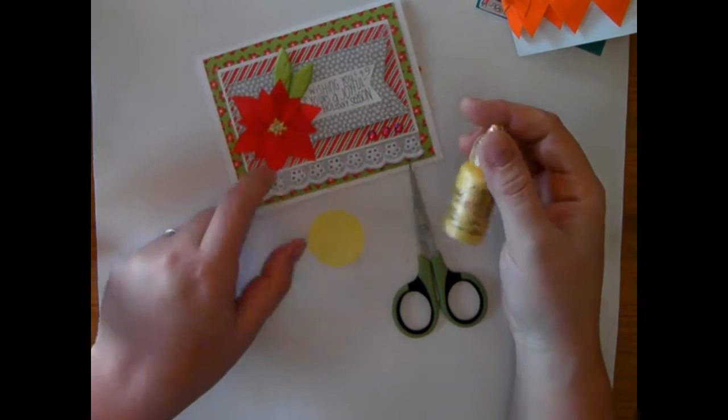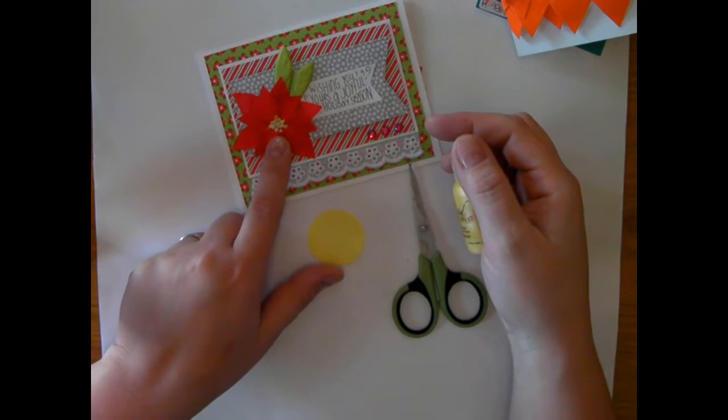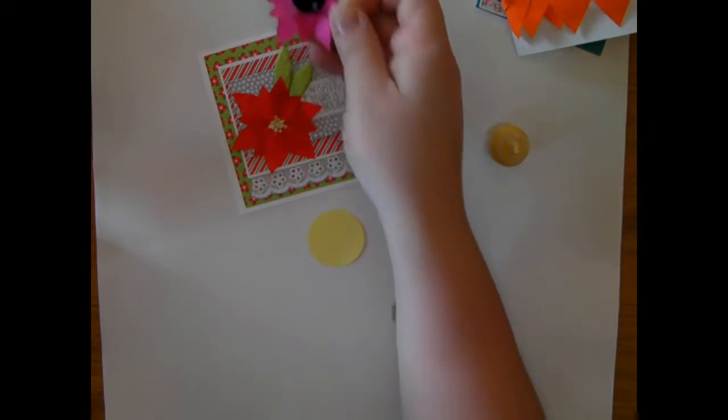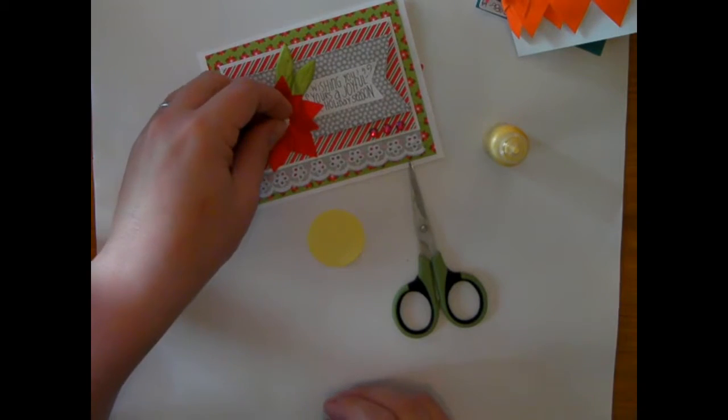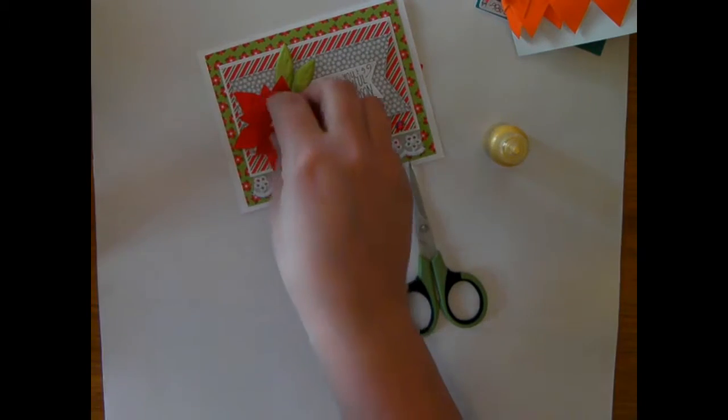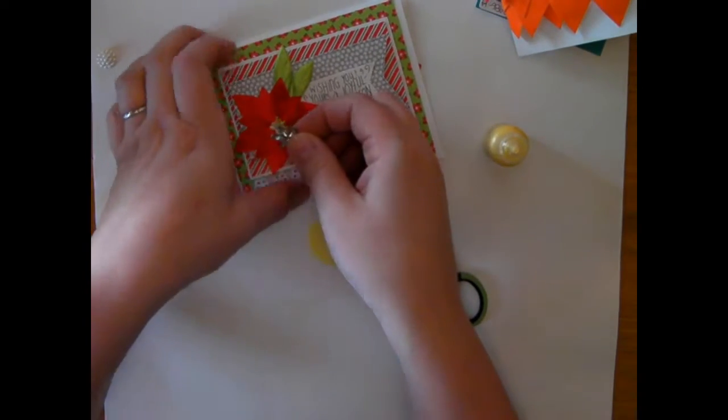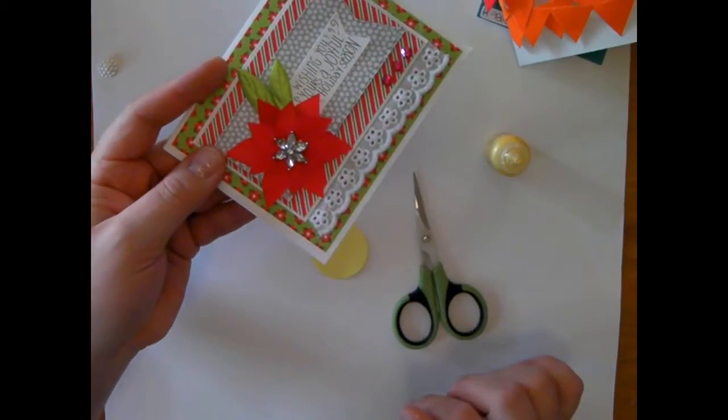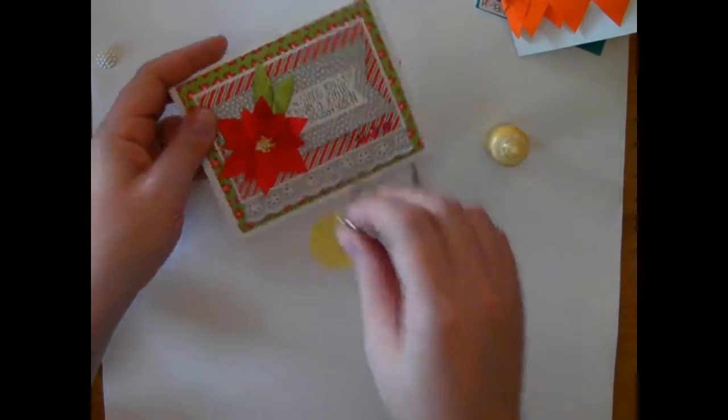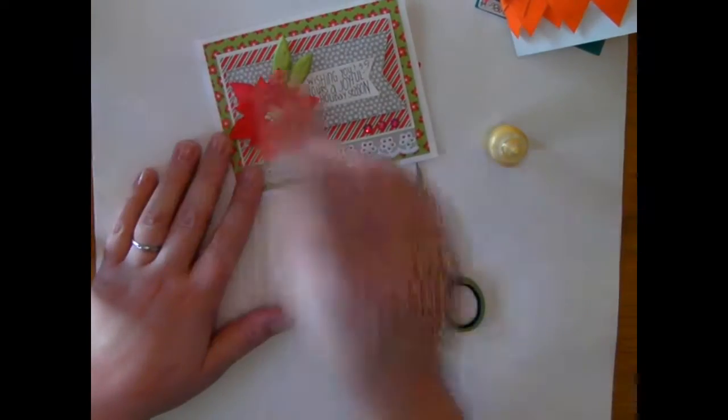You're going to need something for the middle. I'm going to use this liquid pearls to create kind of these beads in the middle of the flower. But the cool thing is you can use a button or anything just to finish off the middle. You will have to cover up this middle though with something. So you're going to want to find something that would work for you, even like a little jeweled button like this one here.